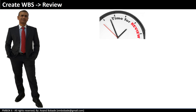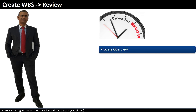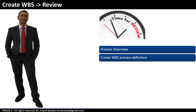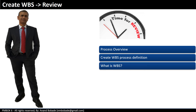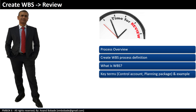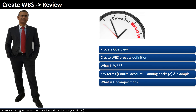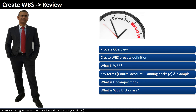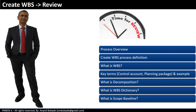We have completed the Create WBS process. In this session we started with the process overview using the Great Wall of China example, went through the Create WBS process definition, learned what WBS is along with key terms, learned about the 100% rule, discussed decomposition as a key technique, saw examples of decomposition by project phases or by deliverables, and finally discussed the WBS dictionary and scope baseline — which consists of the WBS, project scope statement, and WBS dictionary.